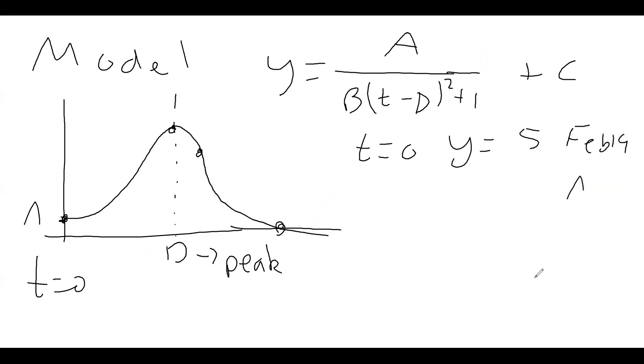Now the next date was April 4th. That was when it was 4935. So the number of days between February 19th and April 4th is 45. Then my next point was y equals 3418, which was April 6th. And that's just t equals 47. So this is my d value, because that's the peak. This is at 45. So if we go in, we have a over b(t minus 45) squared plus one, plus c.